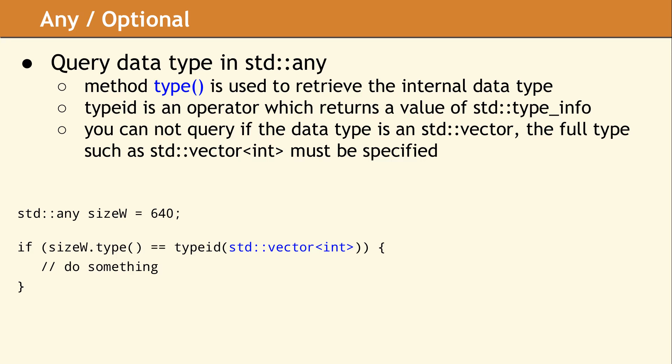In our example, we are specifically checking for a type ID of std::vector<int>. It is worth mentioning that you cannot query if the Any variable is some vector. You must specify the exact vector data type. If your Any variable might contain various vector types, you would have to query for each one individually.